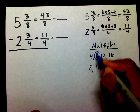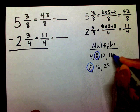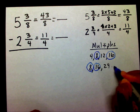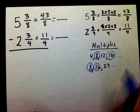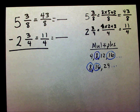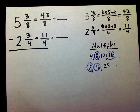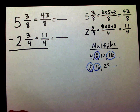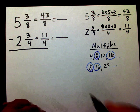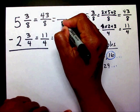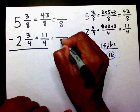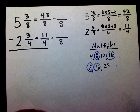They have 8 in common, and they have 16 in common, and more numbers after that. But we're looking for the least common multiple. The least common multiple is 8, and that's going to be our new denominator.